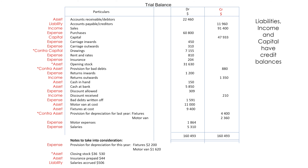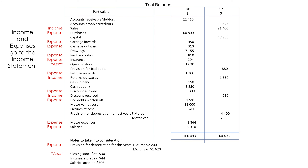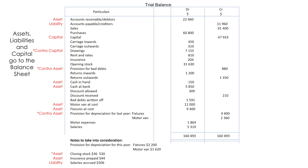Liabilities, income, and capital have credit balances. Income and expenses go to the income statement. Assets, liabilities, and capital go to the balance sheet.